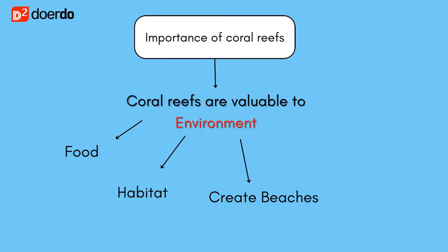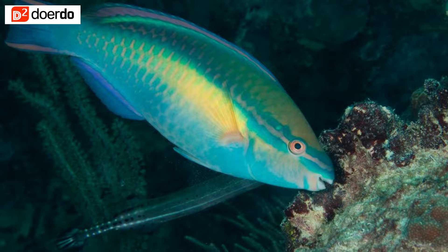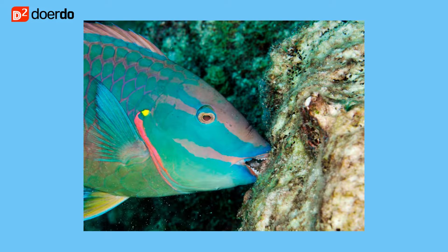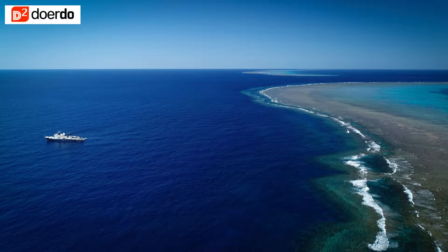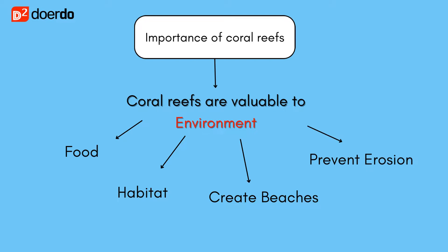Corals also provide material to create beaches. For instance, parrotfish feed on living coral polyps and their excretion creates the white sand seen in tropical beaches. Coral reefs help protect the shorelines from waves — they can absorb wave energy, which can protect the adjacent land mass from erosion.